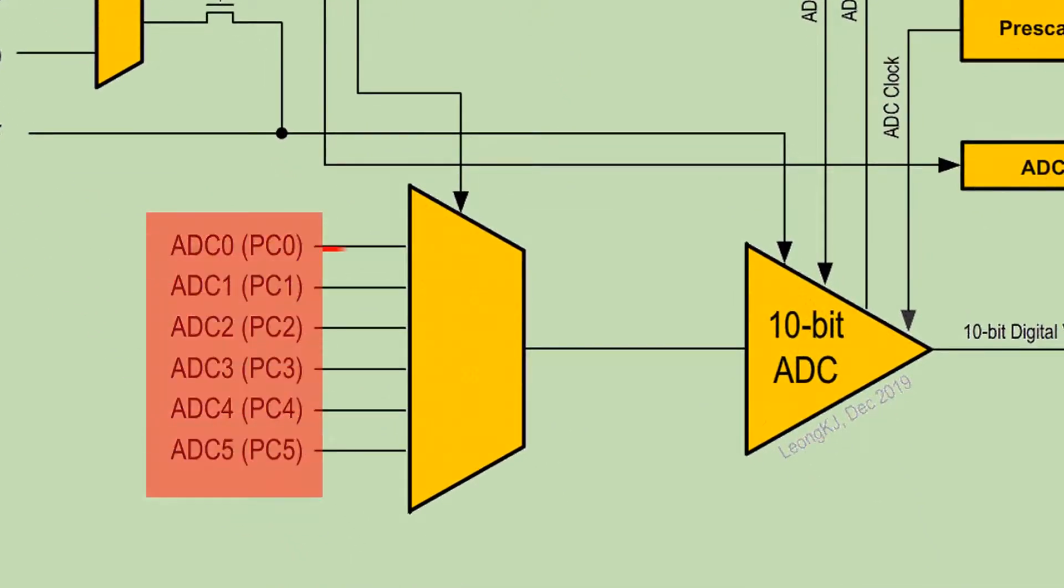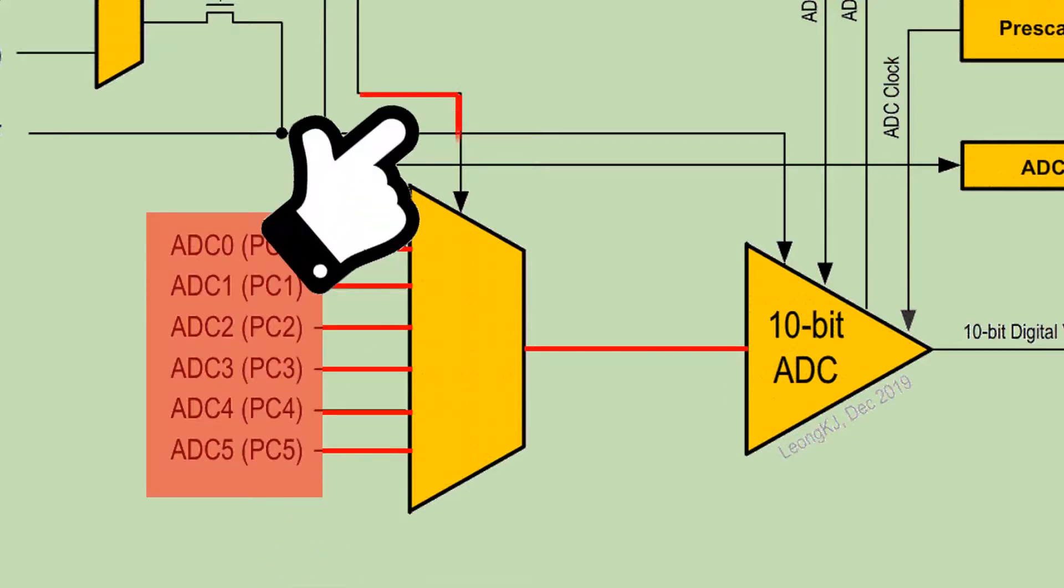Here are six possible analog inputs that are fed to the single input of the ADC. Which input is fed to the ADC is determined by this signal.